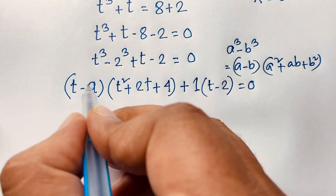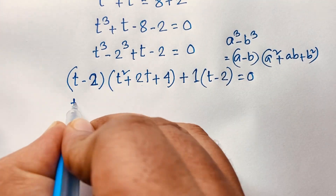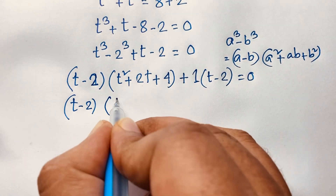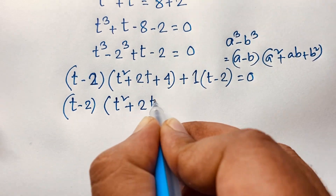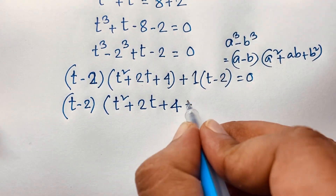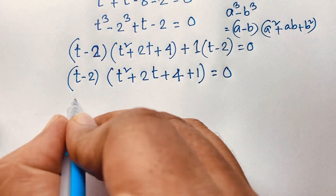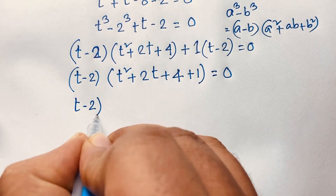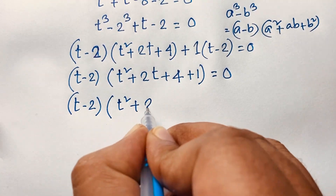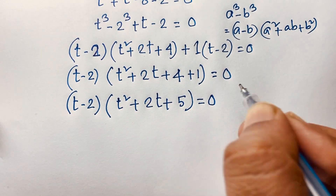Now t minus 2 is common to both parts. Factoring it out: t minus 2 is common, so we divide to get t squared plus 2t plus 4, plus 1, which gives t minus 2 times t squared plus 2t plus 5, equals 0.